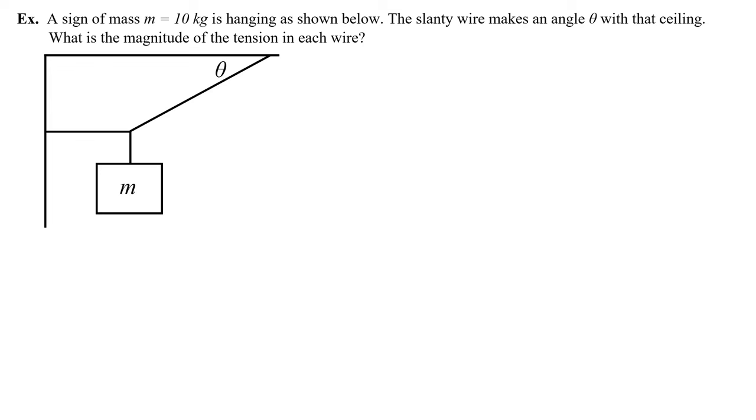In this video we're going to work on some complicated tension problems. Let's start with this one. A sign of mass m equals 10 kilograms is hanging as shown below. The slanty wire makes an angle theta with the ceiling.